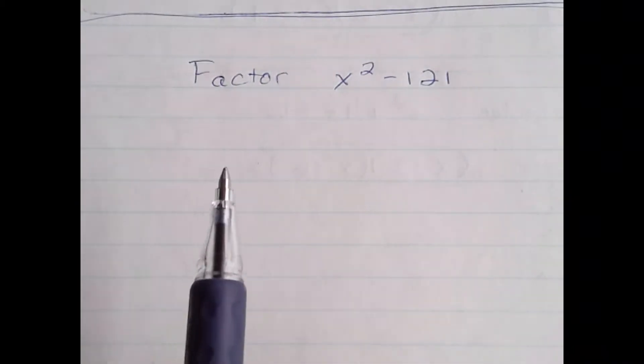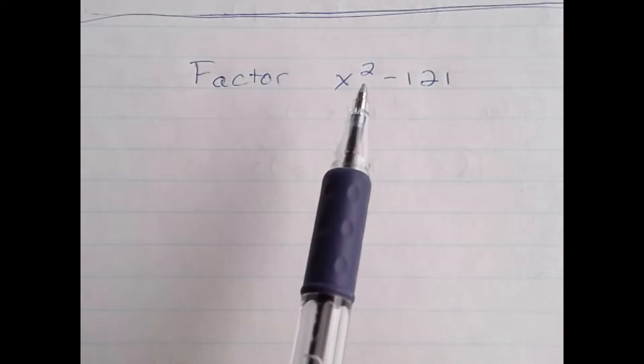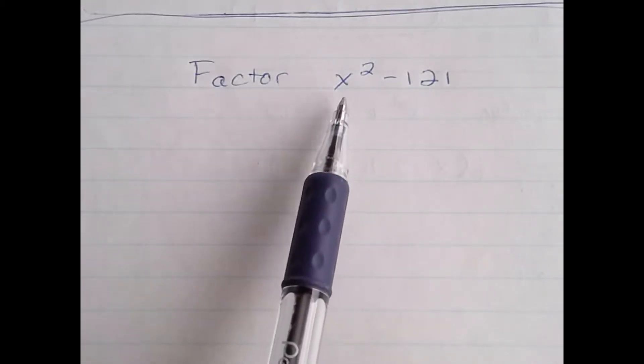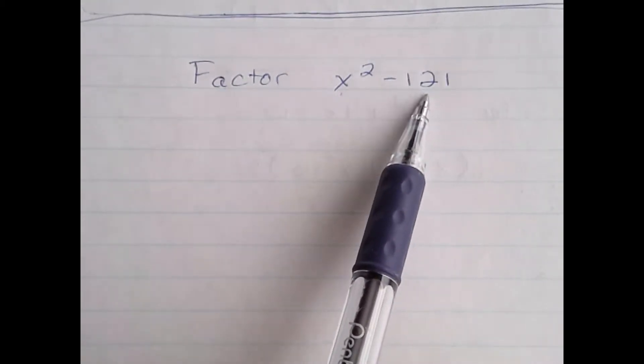Okay, so in this video we want to factor the binomial x squared minus 121. The first thing we notice is that x squared is a perfect square and 121 is a perfect square.